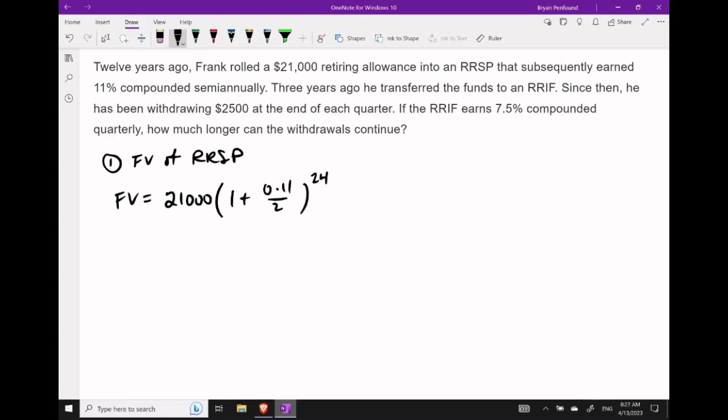In the first part, let's determine the future value in his RRSP account after 12 years. Take 21,000 multiplied by (1 plus i) to the power of n. Here i is 11% compounded semi-annually, and with a term of 12 years with semi-annual compounds, n equals 24. Simplifying this expression, we get $75,906.39.